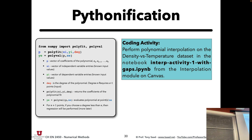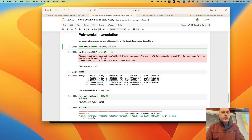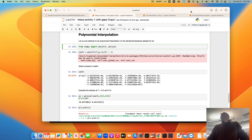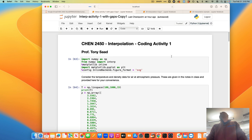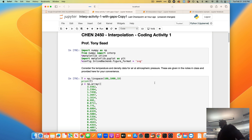Go ahead and open up your interpolation activity one notebook that we were working with last time. If you recall, we were doing a full polynomial interpolant with all the data points for the density and the temperature — that 18-degree polynomial. It was a very high order polynomial, and we did the polyfit with the polynomial directly. Sorry about the projector — someone must have changed the settings and it's all cropped and fuzzy.